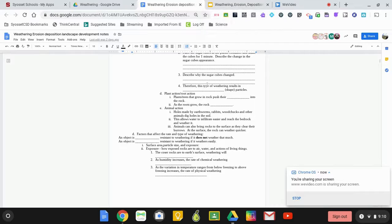If you look at your notes, under letter D, factors affect the rate and type of weathering. An object is resistant to weathering if it does not weather that much. An object is less resistant to weathering if it weathers easily. We talk about exposure, surface area, how exposed the rocks are to air, water, and actions of living things. The closer rocks are to earth surface, weathering will increase.